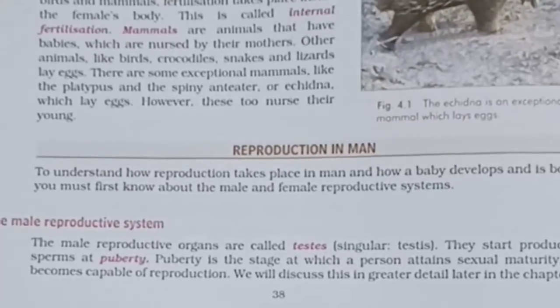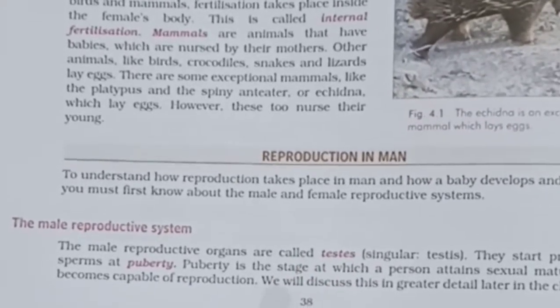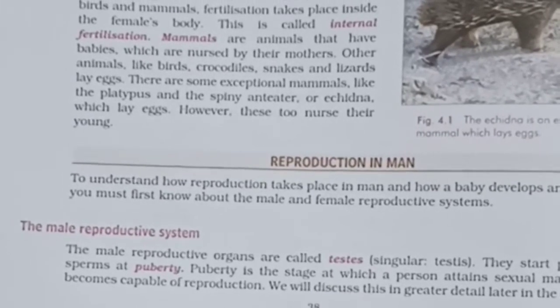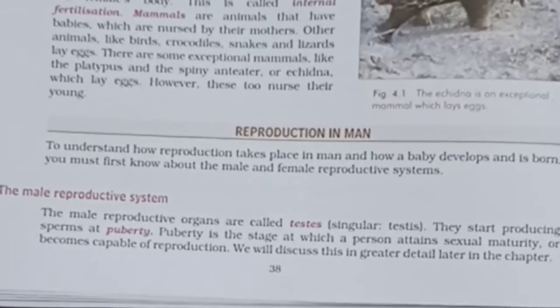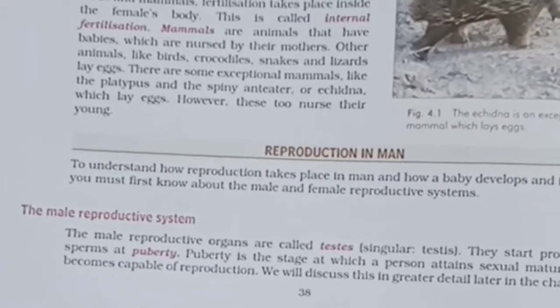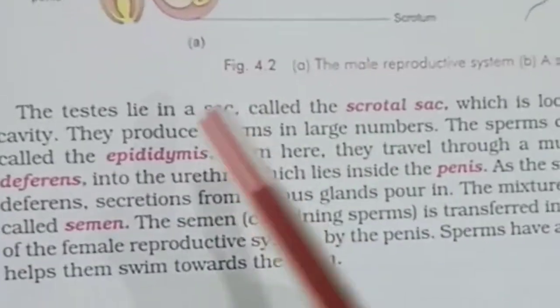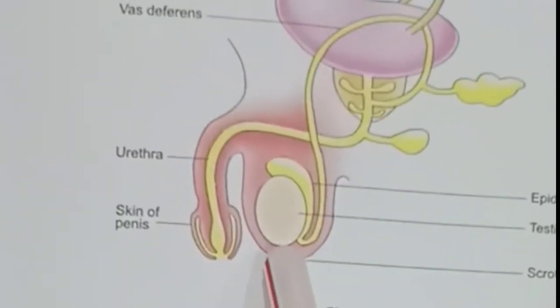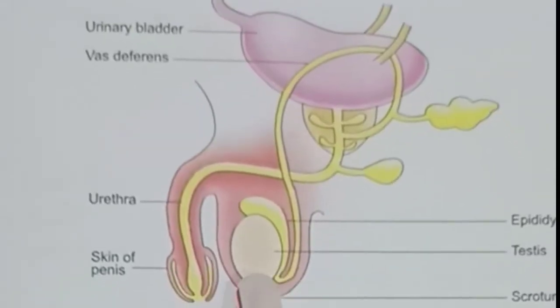Now we will start our next part: reproduction in man. First we will study the organs in the human reproductive system. The human reproductive system is divided into two parts: the male reproductive system and the female reproductive system. The male reproductive system, as you can see in the diagram, consists of the testes — this is where the production of sperm takes place.